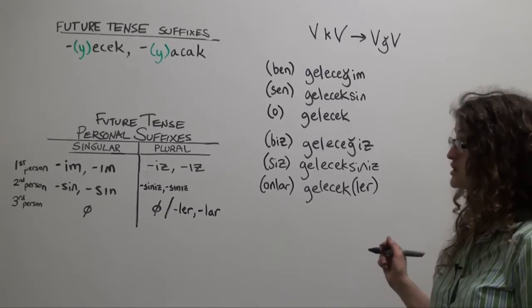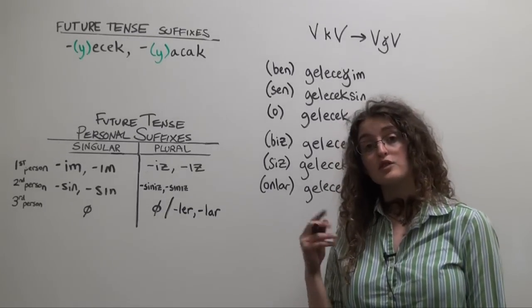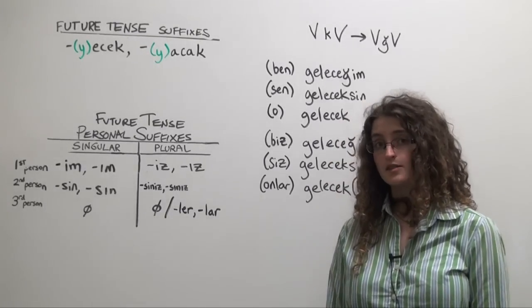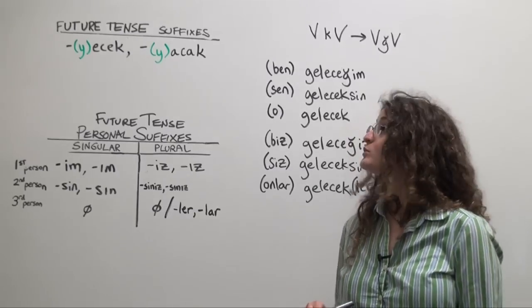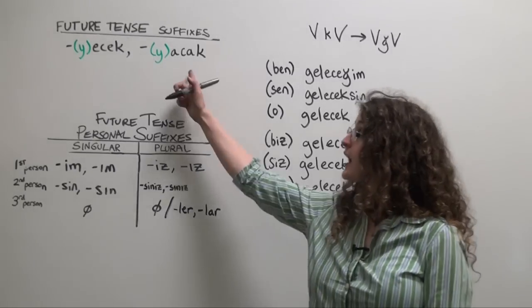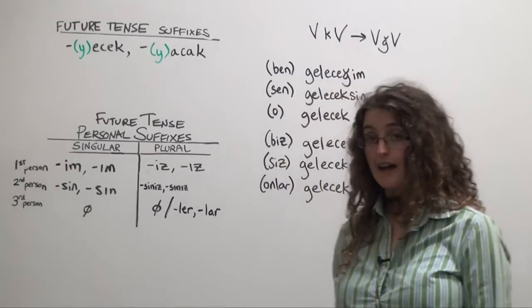Now I mentioned that if your verb stem ends in a vowel, you'll want to insert a buffer y.